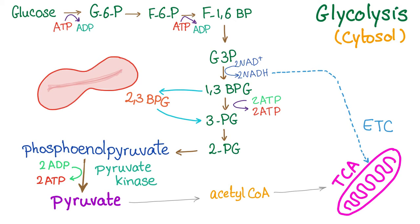Phosphoenolpyruvate is converted into pyruvate by pyruvate kinase. Kinase means there is phosphate here, so 2-ADP will be converted into 2-ATP. Take it to the bank: whenever there is kinase, there is phosphate. Pyruvate, and we are done with glycolysis. Pyruvate can be changed into acetyl-CoA and go into the tricarboxylic acid cycle in the mitochondria — this will never occur in the red blood cell because it has no mitochondria. Also, energy generation via NADH through the electron transport chain occurs in the inner mitochondrial membrane — this will never occur in the red blood cell, which means glycolysis is the only way red blood cells generate energy.